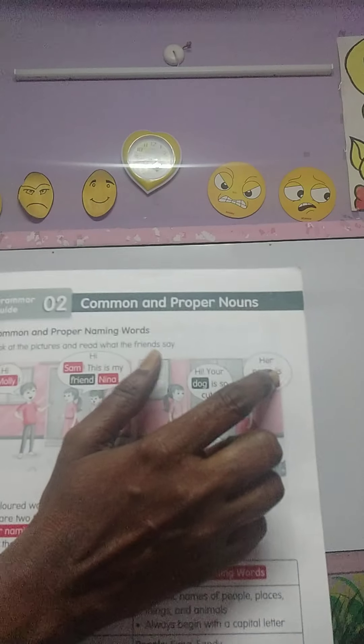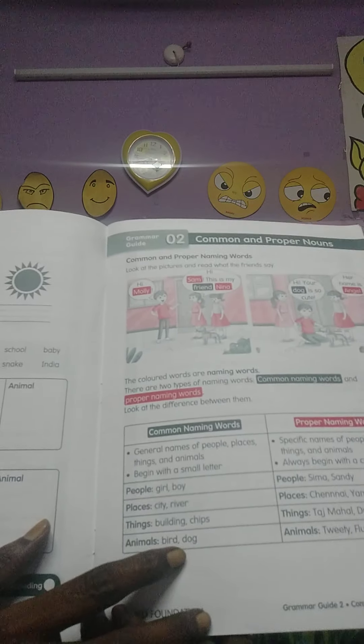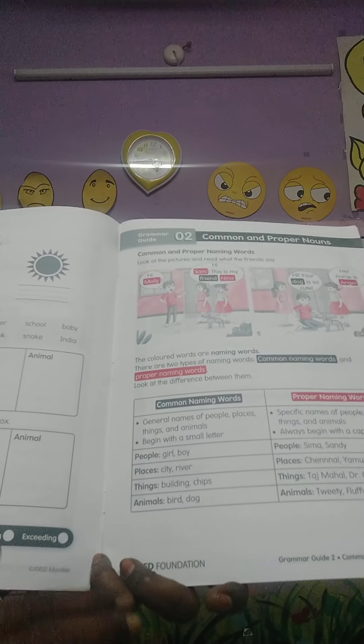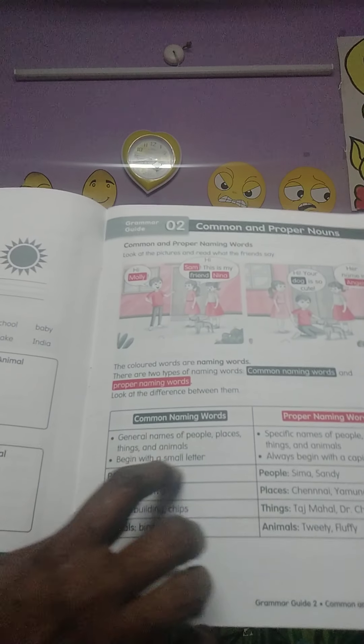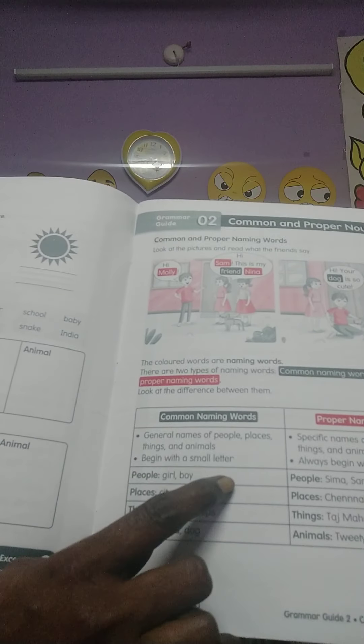I will send the answers. You can see and write it. Next lesson is common noun and proper noun. Common noun is nothing but we say school, mother, house, building. These are called common naming words. Normally we have the name of people, place, things and animals, and it will start with a small letter.